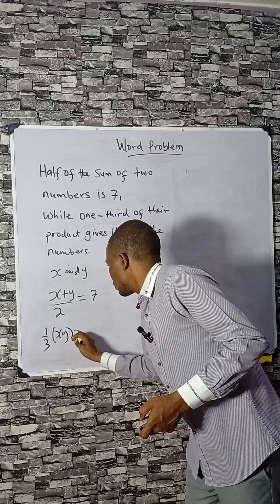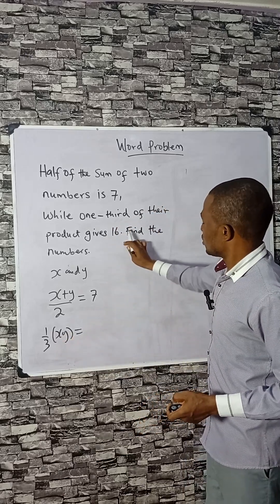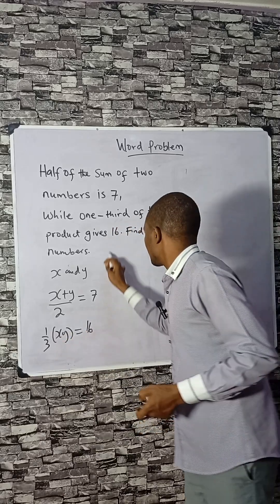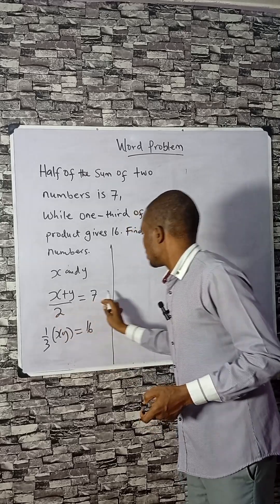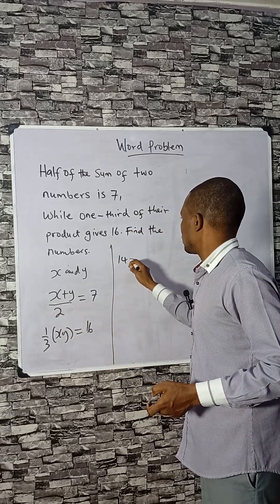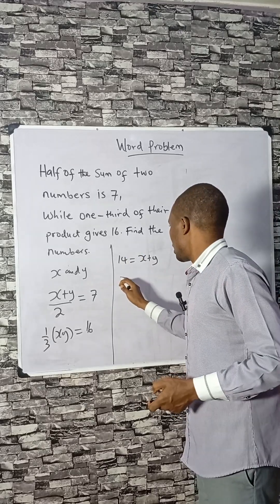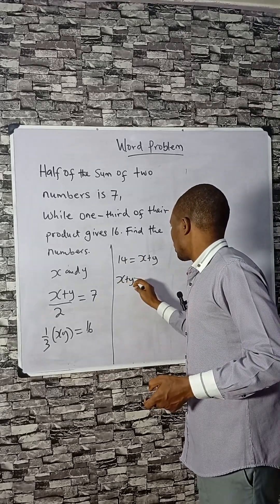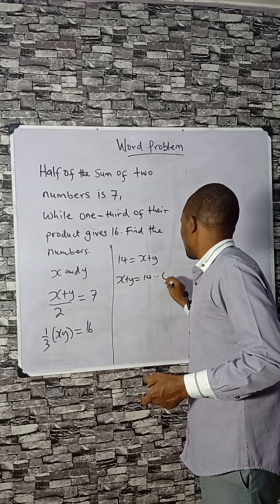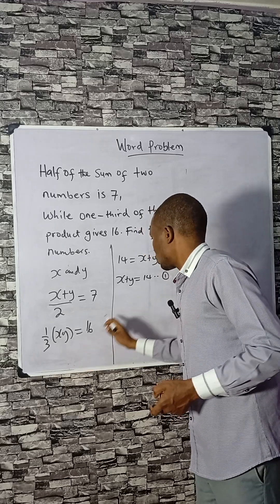From here, 2 times 7 is 14, so 14 equals x plus y. You can write this as x plus y equals 14, equation 1.